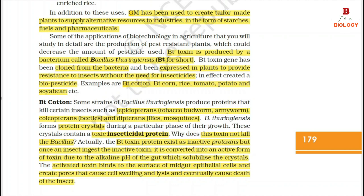Some strains of Bacillus thuringiensis produce proteins that kill certain insects such as lepidopterans (tobacco budworm, armyworm), coleopterans (beetles), and dipterans (flies, mosquitoes). Bacillus thuringiensis forms protein crystals during a particular phase of their growth. These crystals contain a toxic insecticidal protein. The Bt toxin protein exists as an inactive protoxin, but once an insect ingests the inactive toxin, it is converted into an active form due to the alkaline pH of the gut, which solubilizes the crystals.